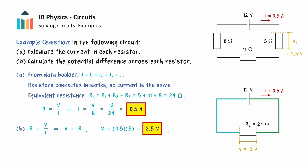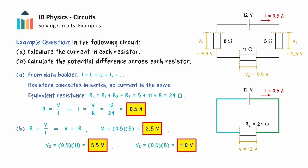Similarly, the potential difference across the 11 ohm resistor is 5.5 volts, and 4 volts is the potential difference across the 8 ohm resistor.